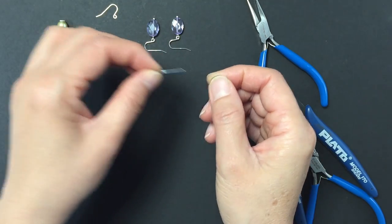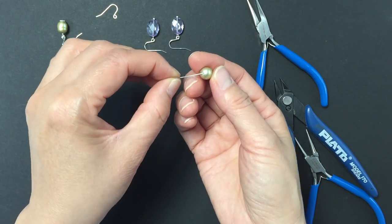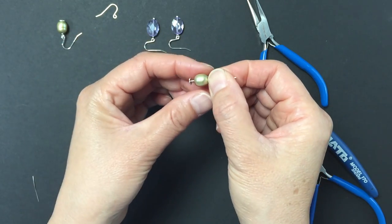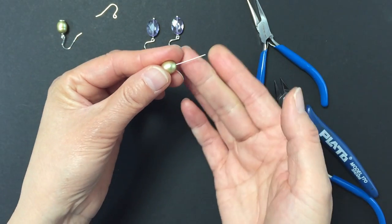We're using a green freshwater pearl and a 22 gauge wire umbrella pin. Slide the pearl onto the pin until it is flush with the end.